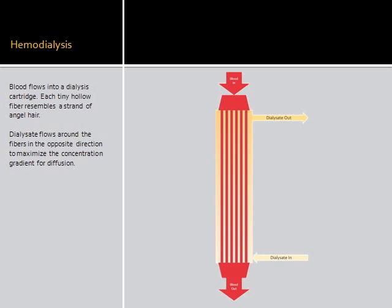There are two forms of hemodialysis. The most common is hemodialysis, in which blood is pumped through a hollow fiber filter cartridge and dialysate is pumped around it, and then clean blood is returned to the patient.